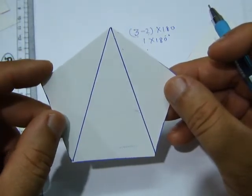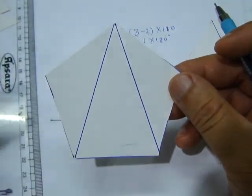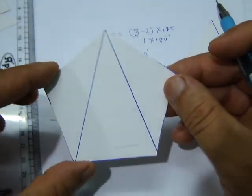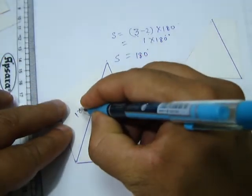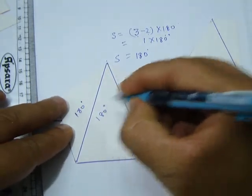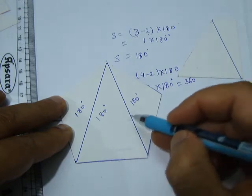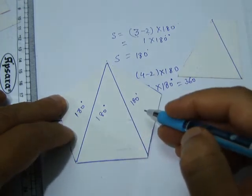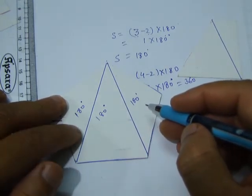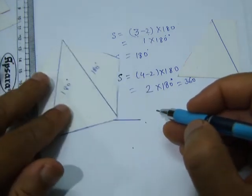The angle sum property of a triangle says that the sum of the three angles of a triangle is 180 degrees. So we have 180 degrees plus 180 degrees plus 180 degrees, which is 180 × 3 = 540 degrees.